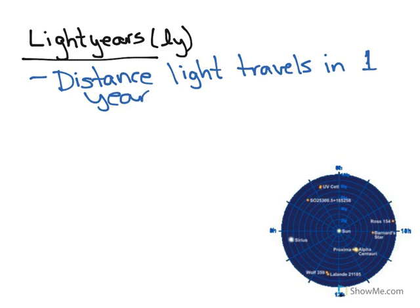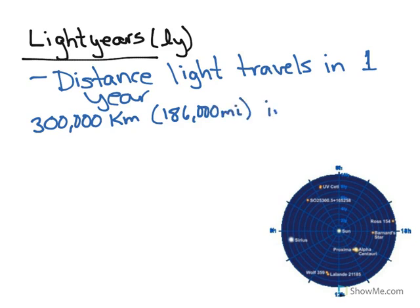Now light is really fast. Light covers 300,000 km or 186,000 miles in one second. So that's fast.